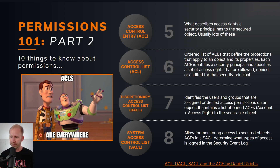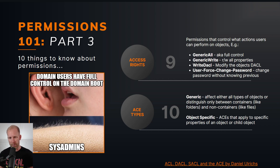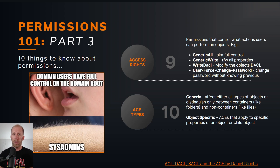An Access Control Entry (ACE) is the specific access right a security principal has on a secured object. The Access Control List (ACL) defines those protections. The DACL combines users and groups with their access rights. The SACL is for security audit logging - it determines what access is logged. Access rights on securable objects include things like Generic All (full control), Write DACL, and user force-change-password. ACE types can be generic, affecting all object types, or specific, applying to particular properties.